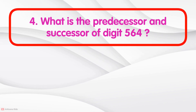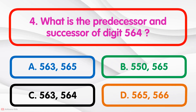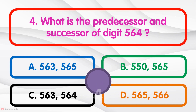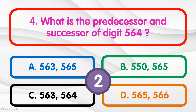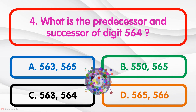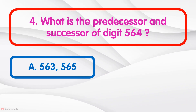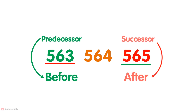What is the preceder and successor of the digit 564? Option A: 563 and 565. 563 is the preceder and 565 is the successor. Preceder means before the number, and successor means after the number.